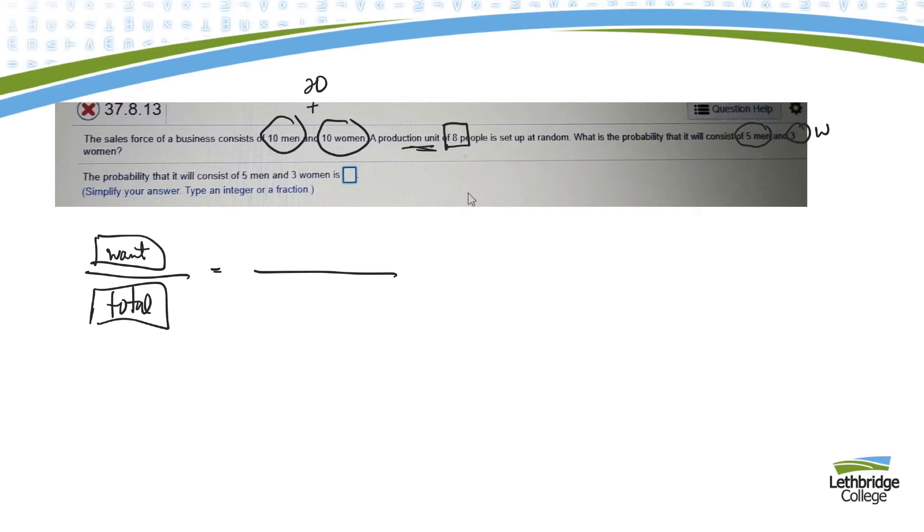Let's maybe start with the bottom because that'll be a little easier. So how many people total do they have? 20. And from those, it doesn't matter what order I choose them in or I select or pick them in. So it's a combination. And they say, how many do I have to have on this committee or on this production unit? It looks like I need eight. Okay, so eight. So the bottom, the 20 choose eight, that's the total number of ways that I can select eight people from 20 where order doesn't matter.